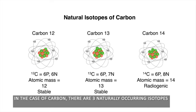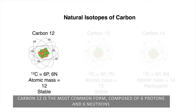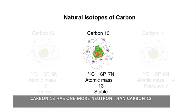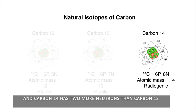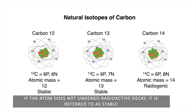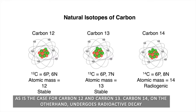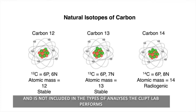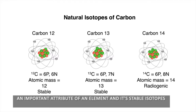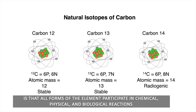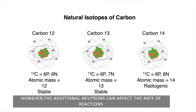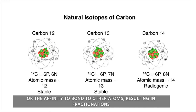In the case of carbon, there are three naturally occurring isotopes. Carbon-12 is the most common form, composed of 6 protons and 6 neutrons. Carbon-13 has one more neutron than carbon-12, and carbon-14 has two more neutrons than carbon-12. If the atom does not undergo radioactive decay, it is referred to as stable, as is the case for carbon-12 and carbon-13. Carbon-14, on the other hand, undergoes radioactive decay and is not included in the types of analyses the CLIPT lab performs. An important attribute of an element and its stable isotopes is that all forms of the element participate in chemical, physical, and biological reactions. However, the additional neutrons can affect the rate of reactions or the affinity to bond to other atoms, resulting in fractionations.